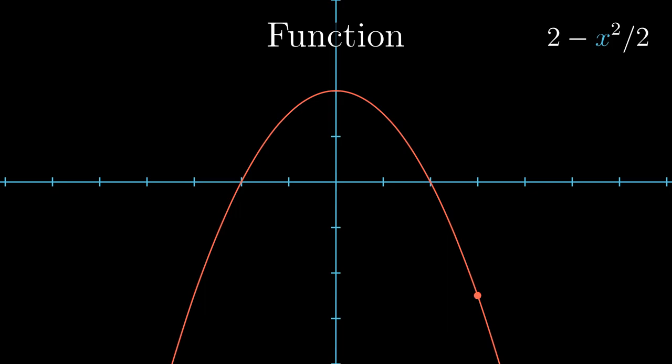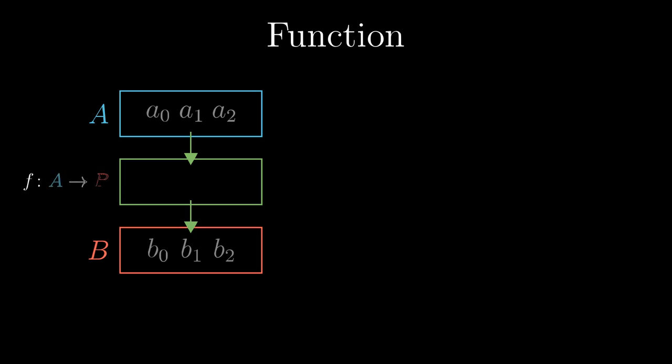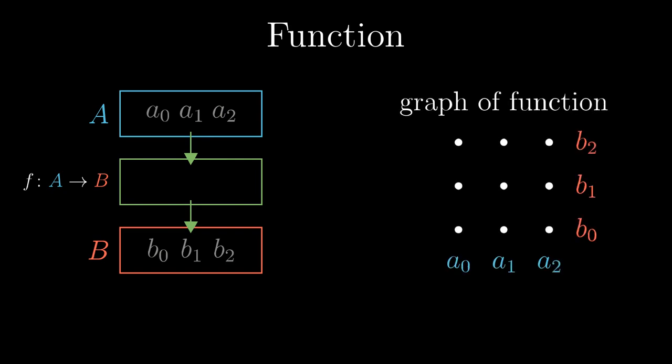However, in general, functions first don't have to be prescribed by a formula and second, they don't have to convert real numbers to real numbers. In general, we have a function from a general set A to a set B that is denoted like this. We can imagine the function as a black box which, given an element of A, somehow determines an element of B. We can plot the graph even for such a function. We construct the Cartesian product A times B and for any x coordinate, we find the appropriate function value. This yields to a subset of the Cartesian product such that every column contains exactly one element.